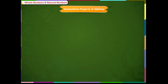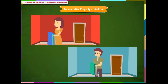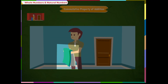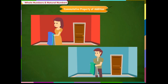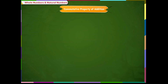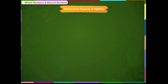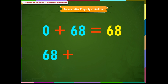Commutative property of addition: Prabha and Manoj were putting wallpapers to decorate their room. Prabha has four blue patterns and two green patterns. Manoj has two blue patterns and four green patterns. They want to put all the wallpaper pieces on the wall. Observe that the sum of two whole numbers is the same irrespective of the order of the addends. This property is called the commutative property of addition.